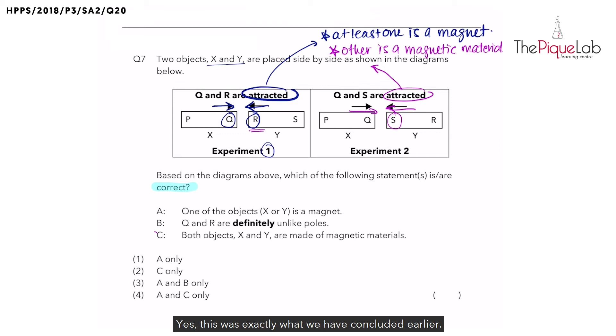Statement B: Q and R are definitely unlike poles. Remember, to have poles, they must be a magnet. Yes, one of the objects is a magnet, hence it has poles. But based on our conclusion, the other object is not a magnet. The other object is not a magnet; it is only a magnetic material, hence it would not even have poles in the first place. Thus B is wrong.